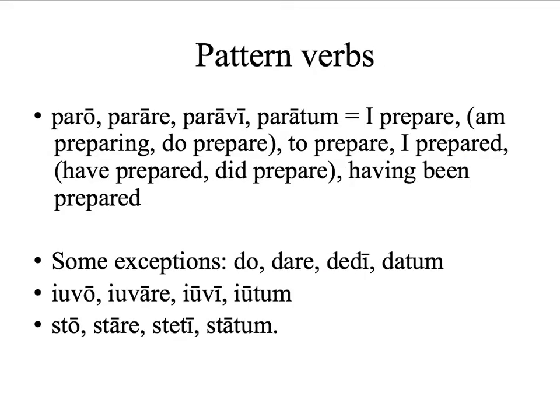We've been using pattern verbs to memorize the pattern for each conjugation. So paro, parare, paravi, paratum — the pattern verb for first conjugation. Note the A. But there are a few exceptions, like the verb do, dare, dedi, datum — I give.